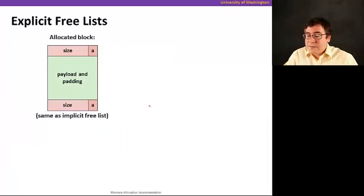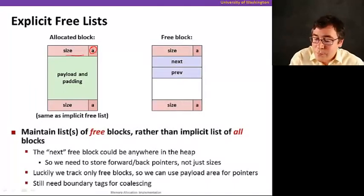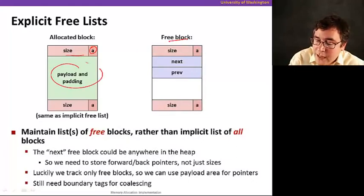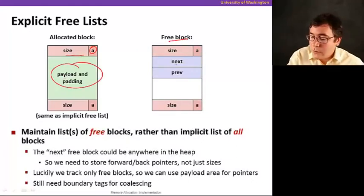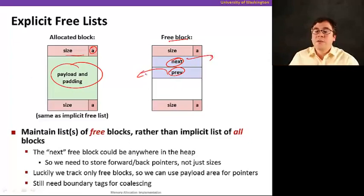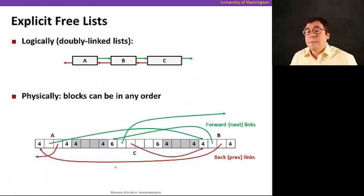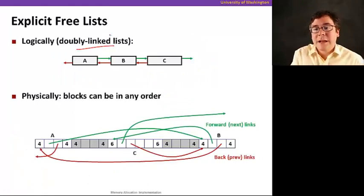Instead of just having the size and an allocated bit like we had in an implicit free list for each block, since free blocks do not have payload and padding, we're going to put pointers there — one that points to the next free block and one that points to the previous one. We still need boundary tags for coalescing. Logically, it's a doubly linked list with pointers to the previous and next blocks.